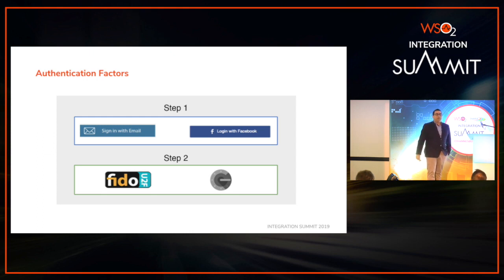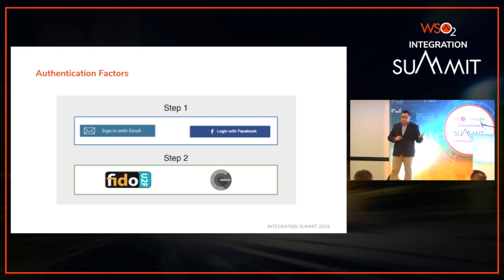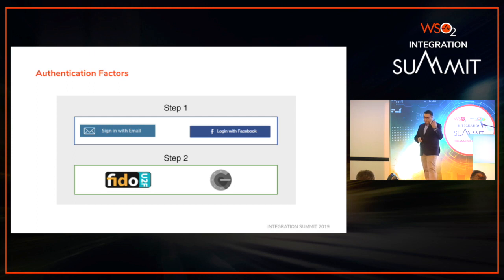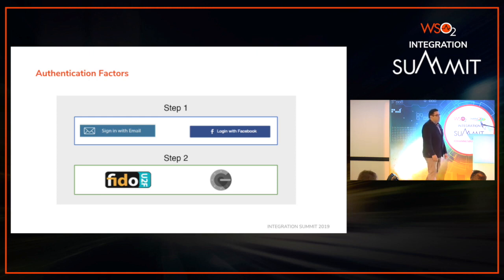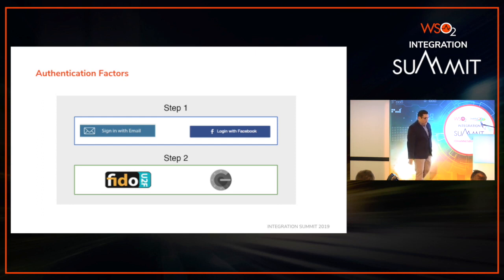In multi-factor authentication, you use at least two of these factors from different categories. You should not pick something like a password and a passphrase from the same category, since both can be misplaced. You pick across factors. WSO2 Identity Server allows you to define different steps in your authentication and choose what to engage at each step. For example, the first step can allow login with email or Facebook; the second step can use a FIDO-compatible device for a one-time password, or Google Authenticator. Identity server can do multi-factors, and you can decide how many factors to use — it's not limited to two.